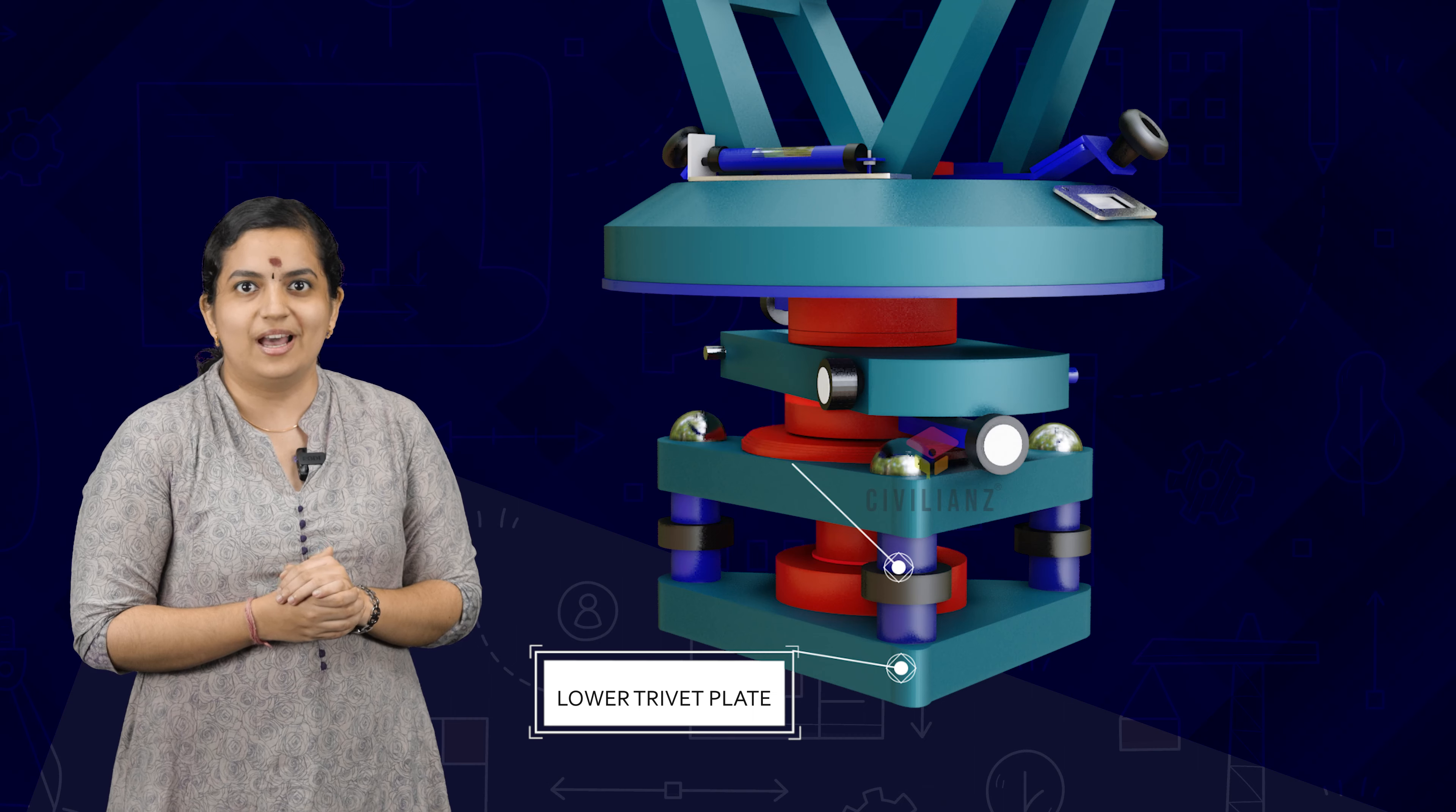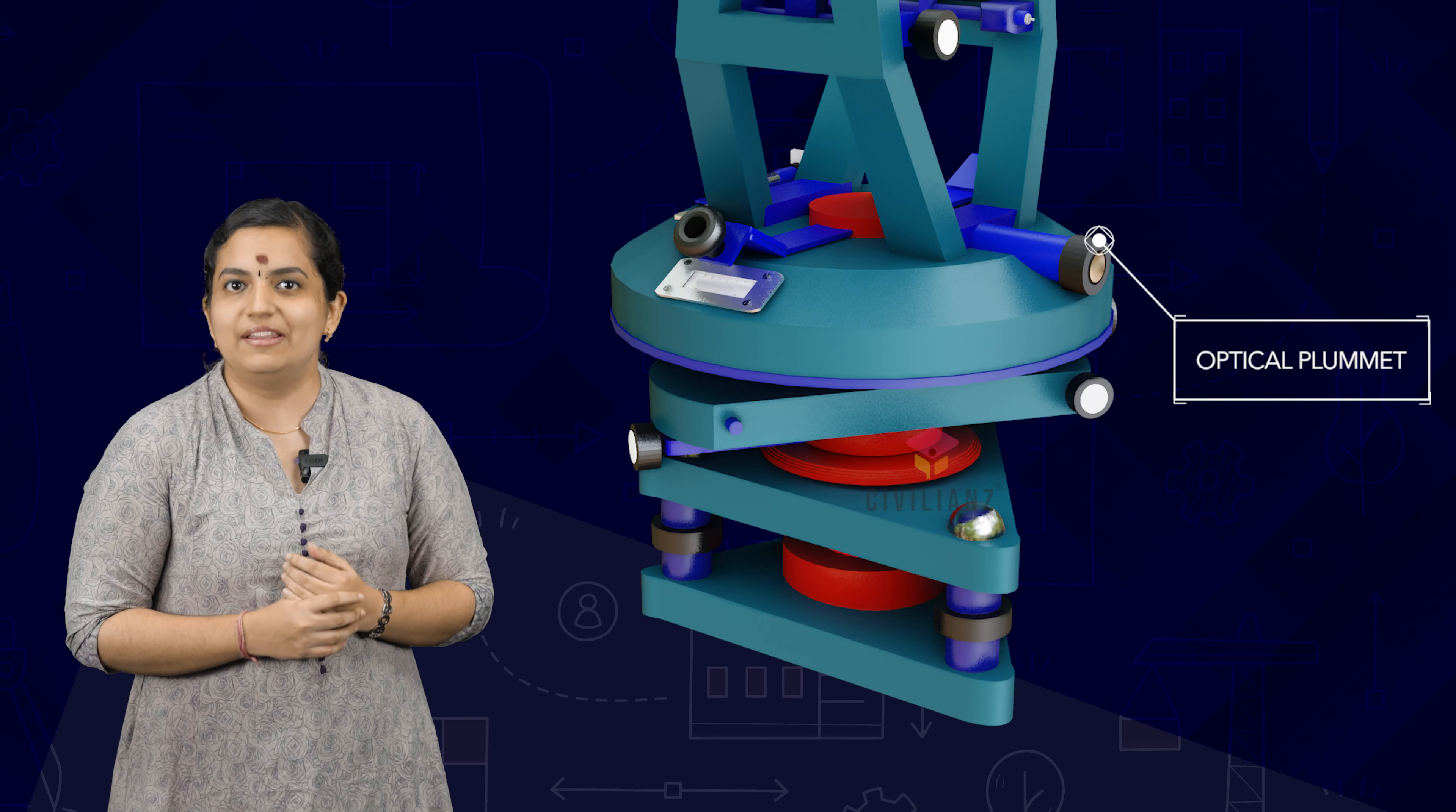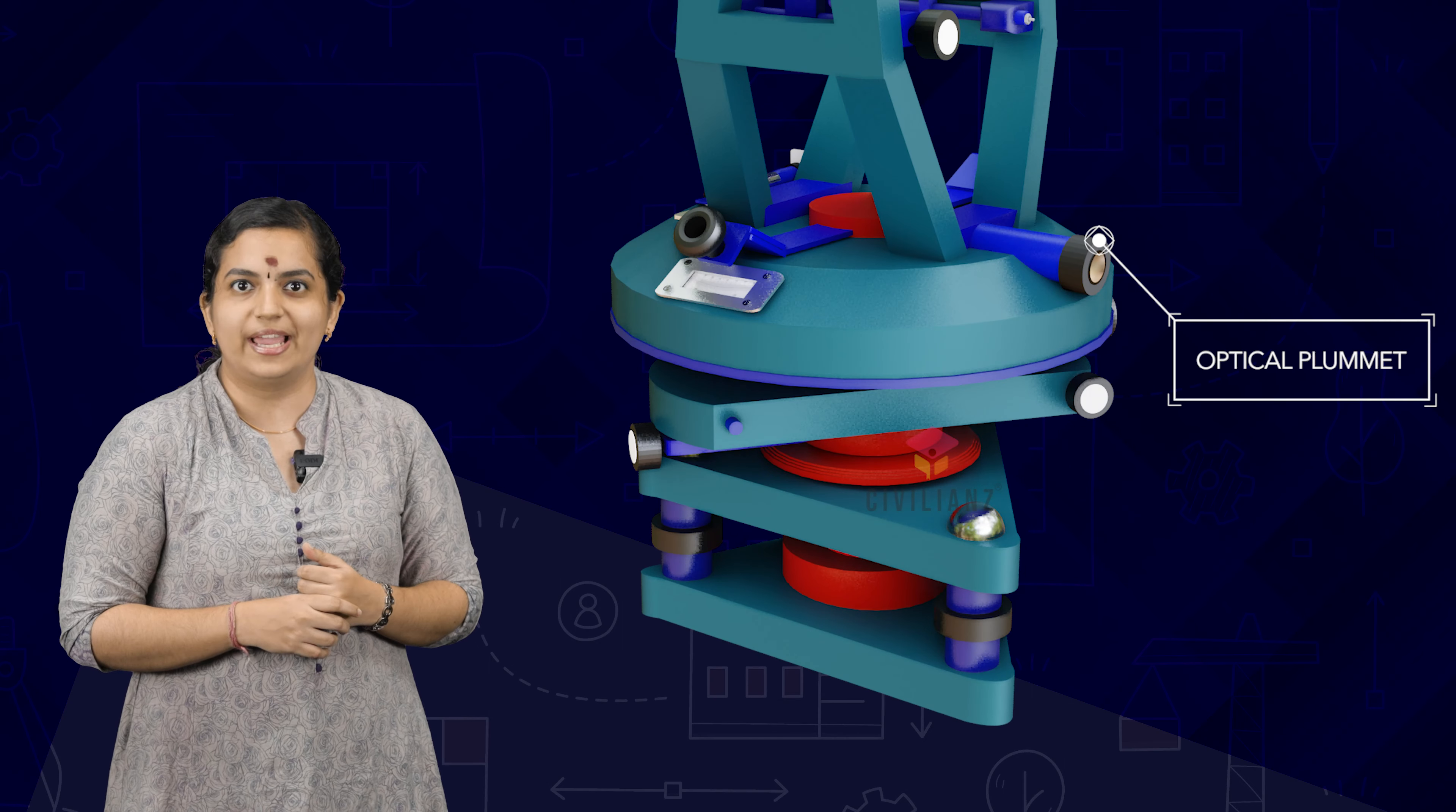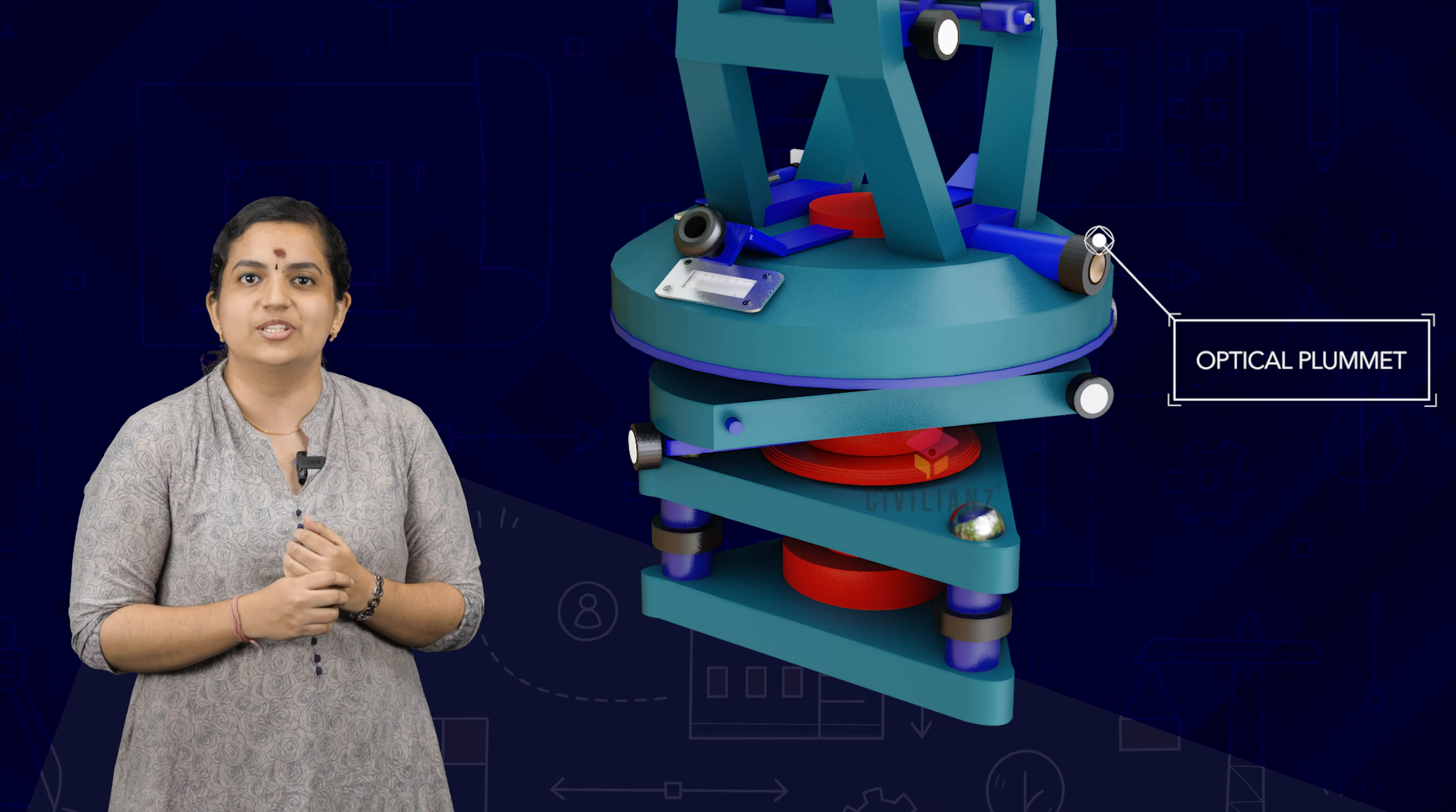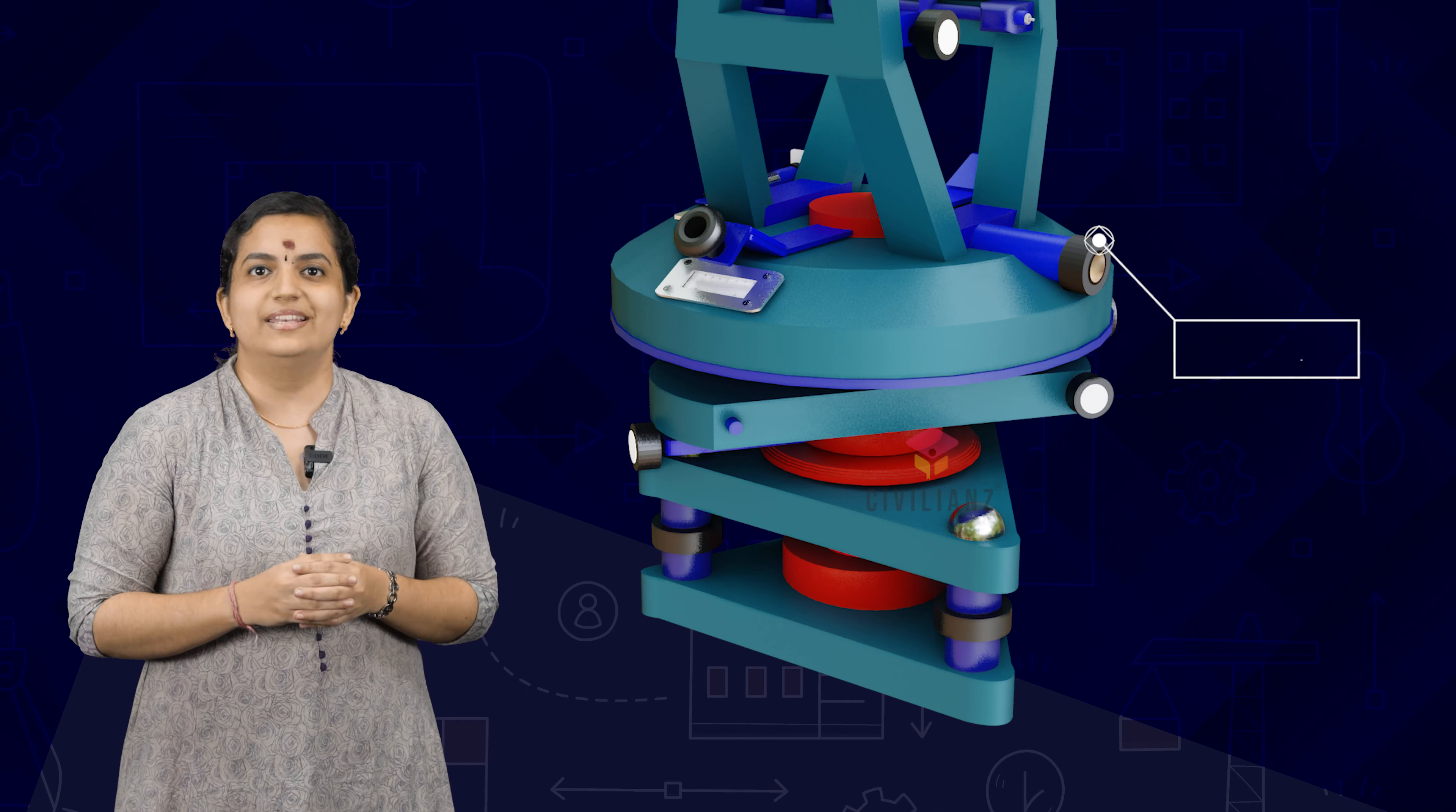Optical plummet is a device attached to the theodolite for accurately centering the instrument over the station mark.